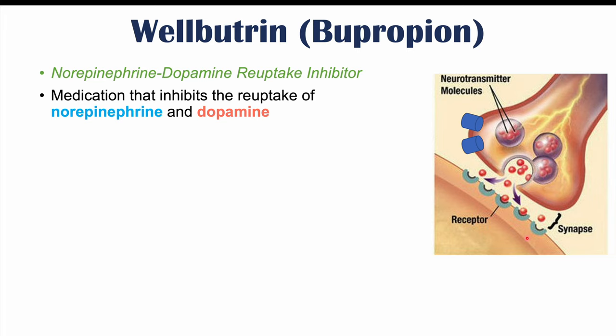Whether that be norepinephrine or dopamine, those neurotransmitters are going to enter into the synapse — that space in between those neurons — and then some of those neurotransmitters can bind to receptors on the postsynaptic neuron. Whatever's left over in the synapse can be brought back up into the presynaptic neuron through what we call reuptake channels or reuptake pumps.